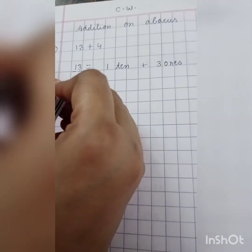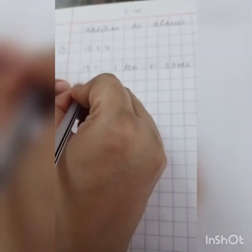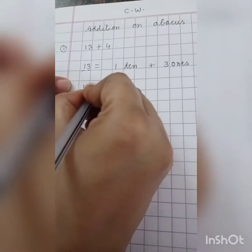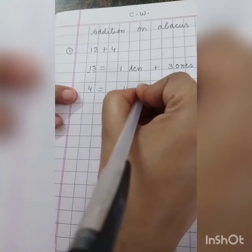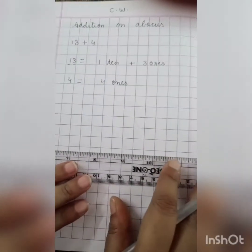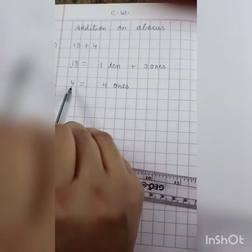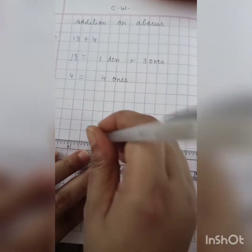And which number we have to add in this 13? 4, only single number, single digit number 4. And 4 is 4 ones. So we have to add 13 and 4. So ma'am will make an abacus first.